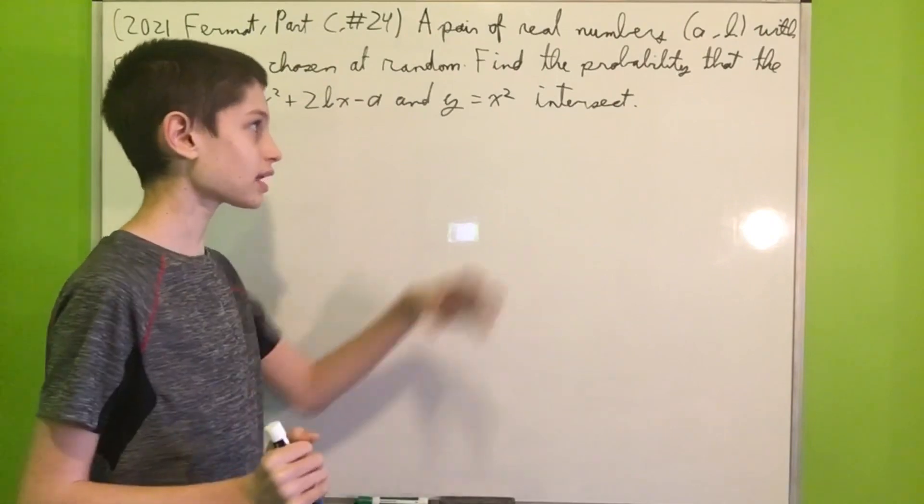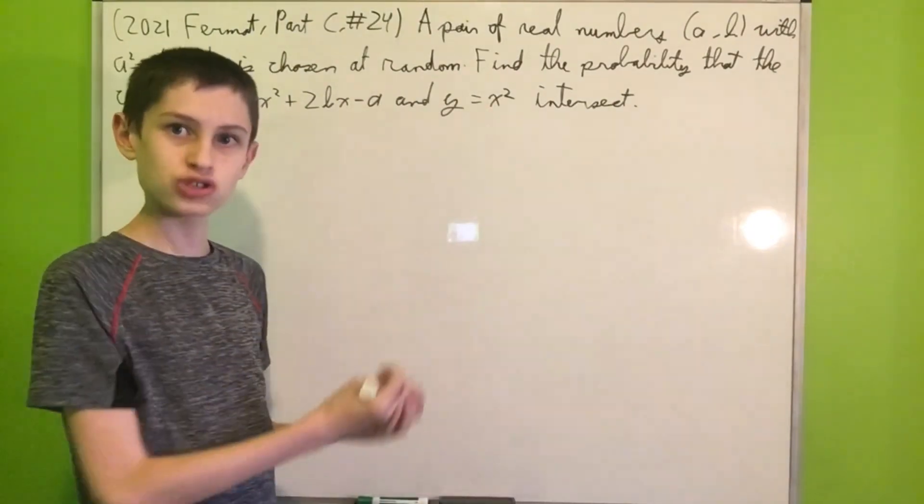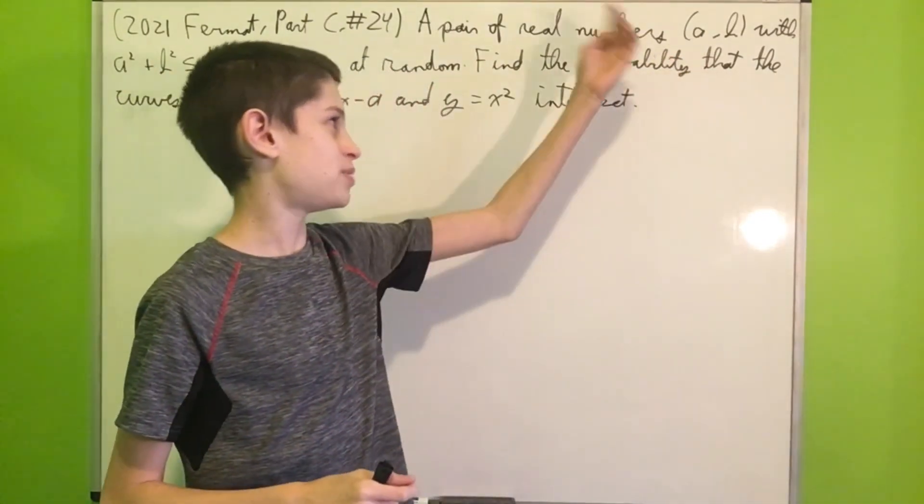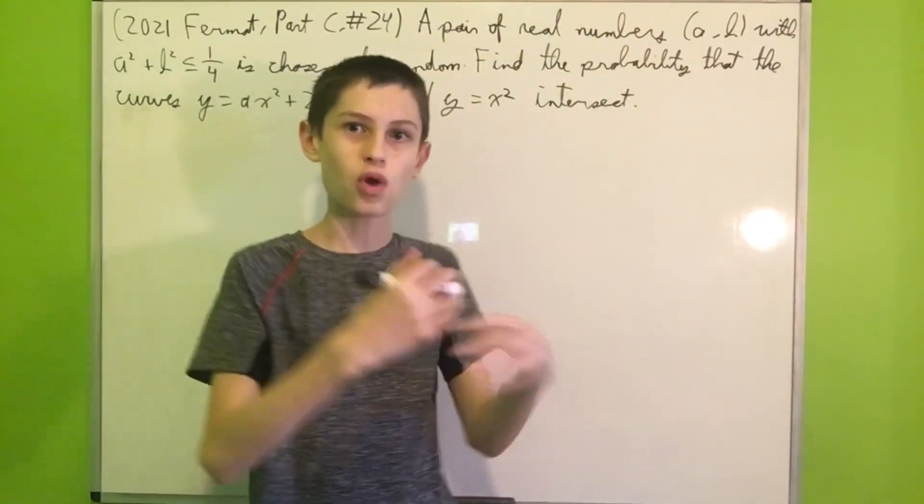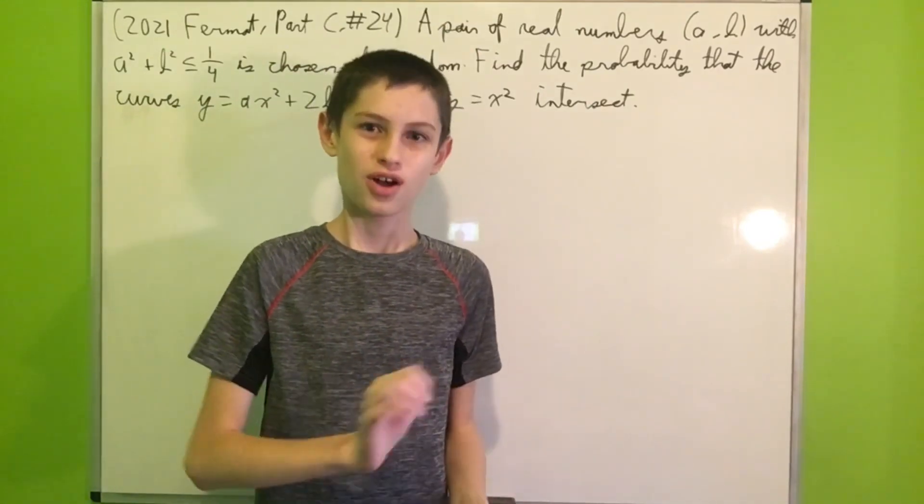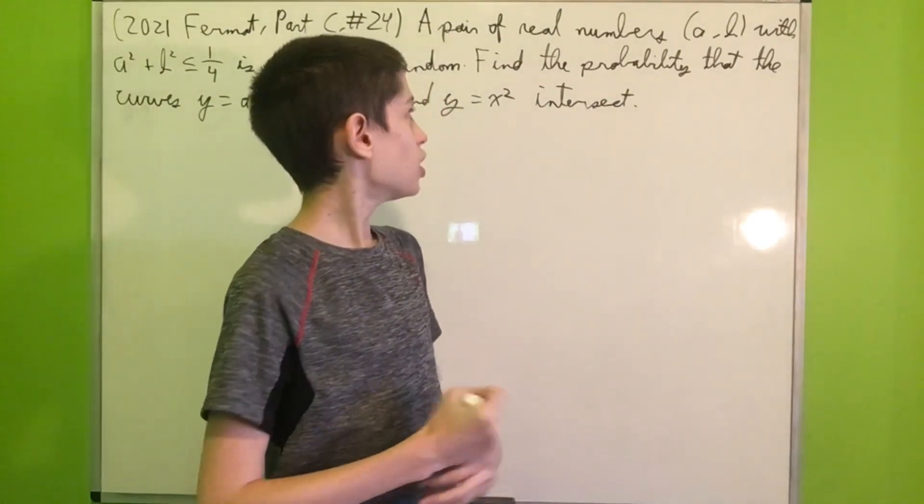This wasn't the exact wording of the problem because in the actual contest they were like, if P is that probability, then 100P is closest to, and then you had five answer choices. But we're mathematicians here. We don't approximate, we find the exact answer.